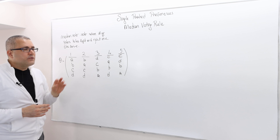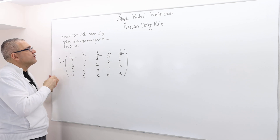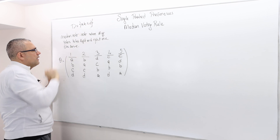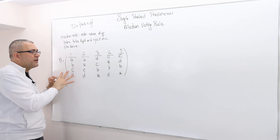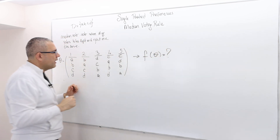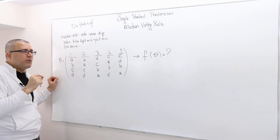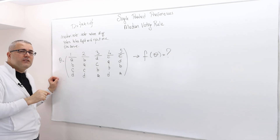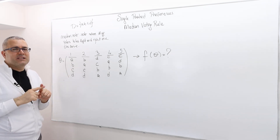Here's a simple example. There are four candidates: A, B, C, D. Each agent has strict preferences — these are types, so this is a type profile. Under this type profile, what is going to be the outcome? What is F of theta? The median voting rule is going to select the top choice of the median voter. Who is the median voter? It is the voter whose number of voters on his left and right are exactly the same.